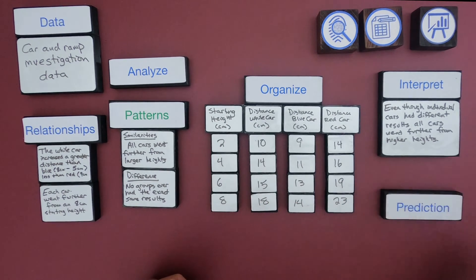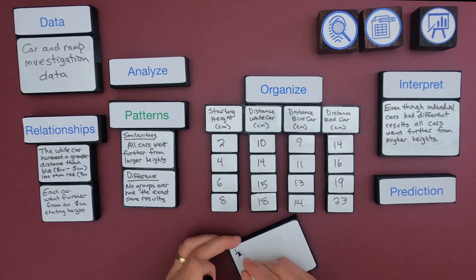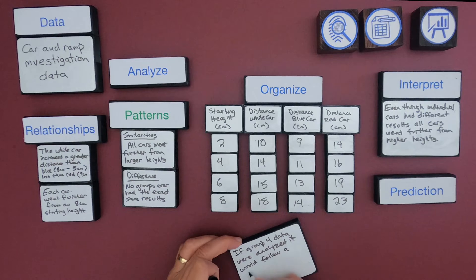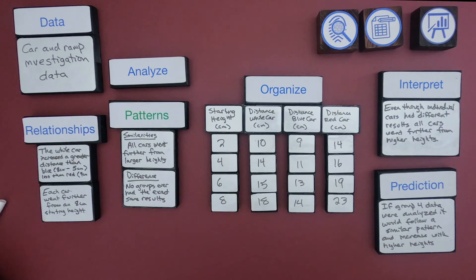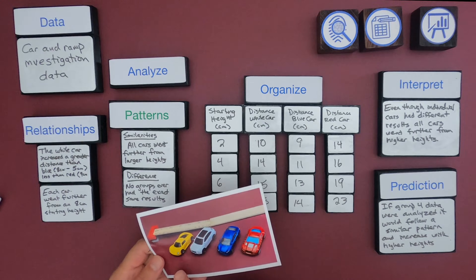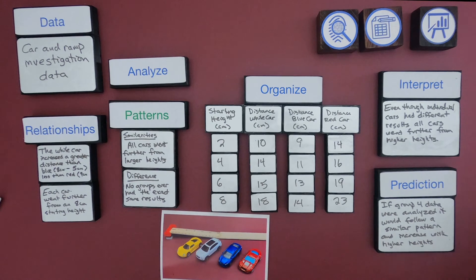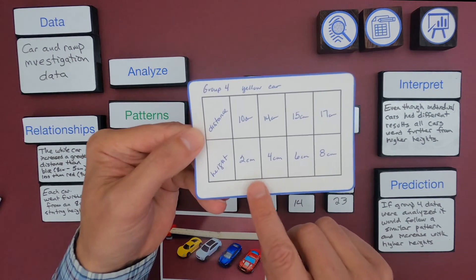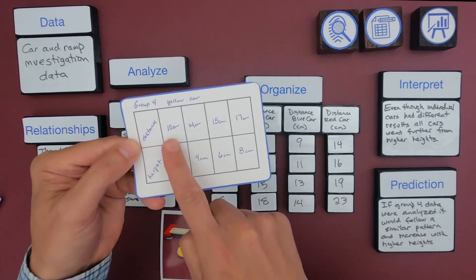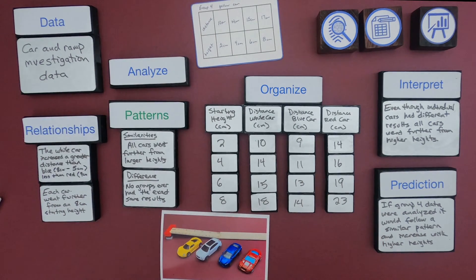The last thing I can do is use this data to make a prediction. I noticed in the first photograph there were not just three cars but four. So my prediction is: if group four data were analyzed, it would follow a similar pattern and increase with higher heights. I happened to have group four data on a yellow card — as the height increased, the distance traveled went from 10 to 14 to 15 to 17, which looks very similar to the white car.